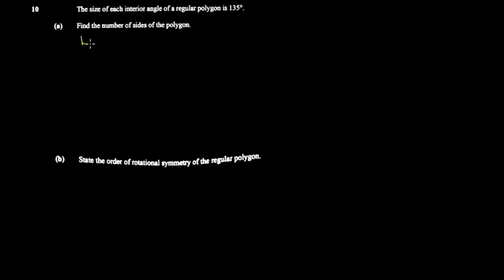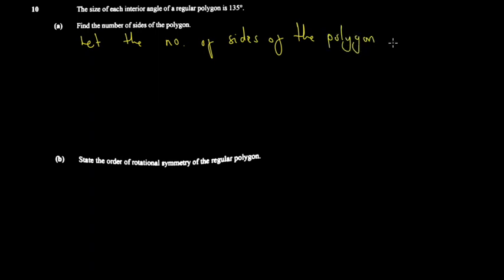Let's move on to the next part. It says the size of each interior angle of a regular polygon is 135 degrees. Find the number of sides of the polygon. Here you have to let the number of sides — usually denoted by n. You have to recall the formula for the total interior angles, which is 180(n minus 2).